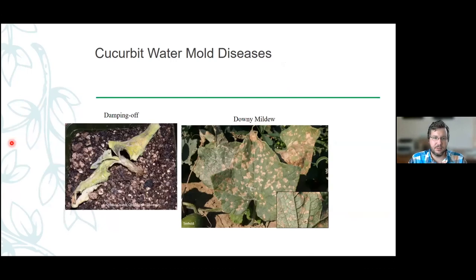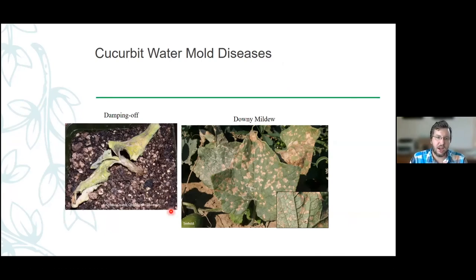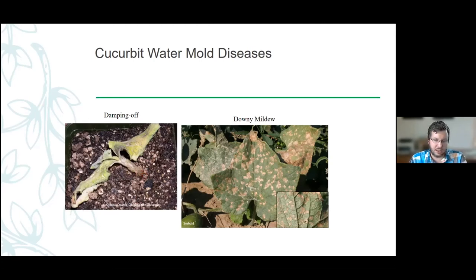Damping off is fairly common and usually only affects seedlings. Once they get a full-size true leaf, it's less of an issue. The fungi come along and attack the new seedlings right at the soil surface. The big thing is making sure that you're getting your plants started off in the right environment. Downy mildew can be a huge issue — luckily for us, it doesn't overwinter here.